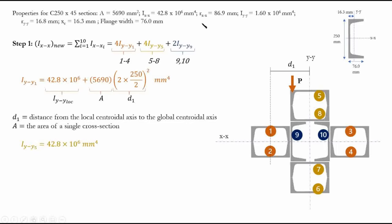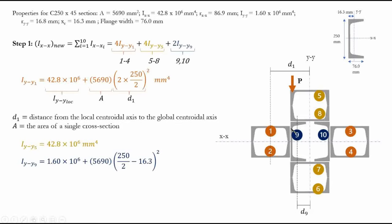For IYY9: about the YY axis we use the local IYY value — 1.60×10⁶ — plus the parallel axis term 5690·d², where d = (250/2) − 16.3, which is half the depth minus the XC value. Using the final formula and summing all contributions, we calculate IYY_new = 1.9026×10⁹ mm⁴.